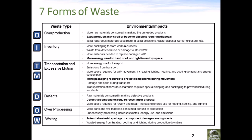When we overproduce, that means extra products may spoil or become obsolete requiring disposal. When we have excess inventory, we have to provide more energy to heat, cool, and light the inventory space. It also takes up more real estate — maybe we have to rent a larger space or have a larger building to house all the inventory. When we transport or have excessive motion, we have to use energy for that transportation and there may be emissions that come from it.